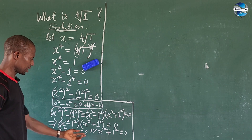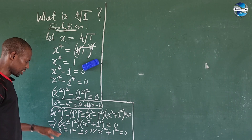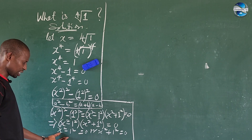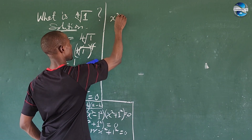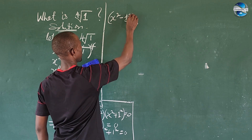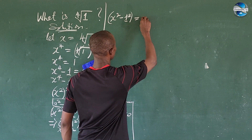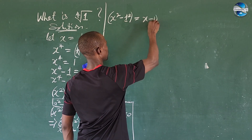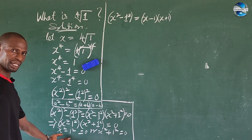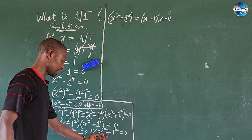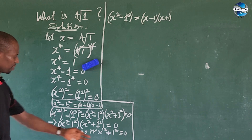We take x squared minus one squared equal to zero again — we have a difference of two squares, so we can apply that law again. Applying the difference of two squares to this gives us (x - 1)(x + 1) equal to zero.